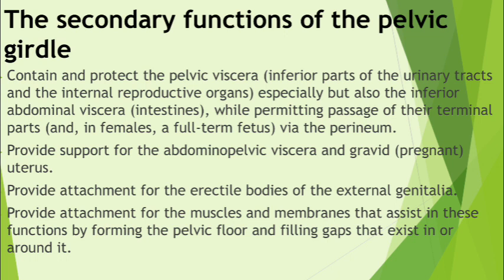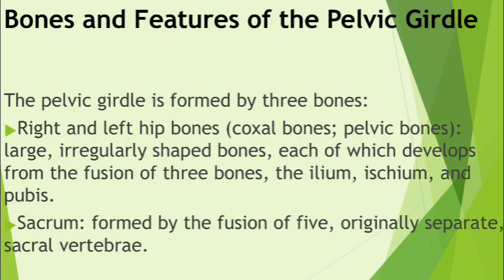The pelvic girdle gives attachment to the erectile bodies of the external genitalia, and in the male provides attachment for muscles and membranes that assist in forming the pelvic floor. There are existing gaps in the pelvic floor that are filled by these muscles, which are attached to the bony framework — the pelvic girdle. The pelvic girdle is formed by three bones: the right and left hip bones, also called coxal or pelvic bones, and the sacrum.